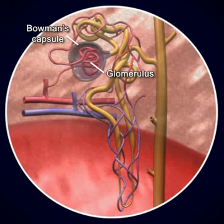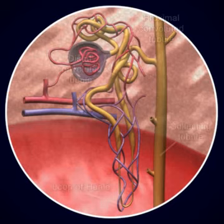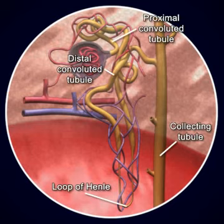The renal tubule is composed of the proximal convoluted tubule, the loop of Henle, the distal convoluted tubule, and the collecting tubule.